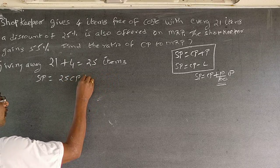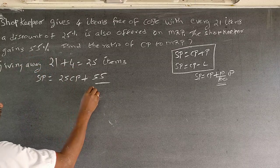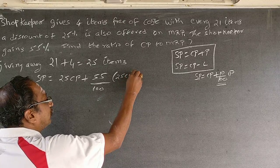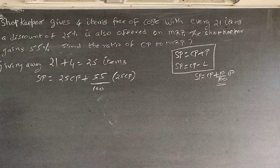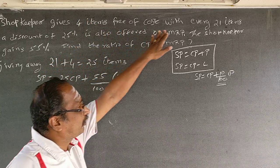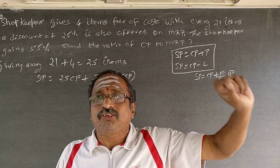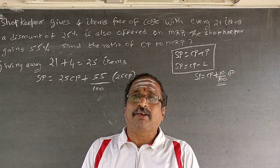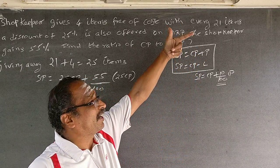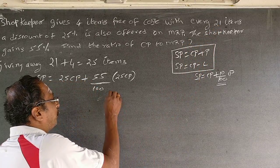He is selling only 21 items, so the MRP is based on only 21 items. Don't compare it with 25 items — he can charge MRP on only 21 articles.